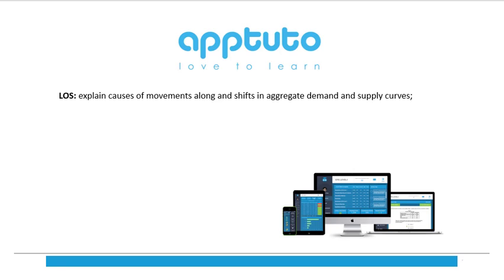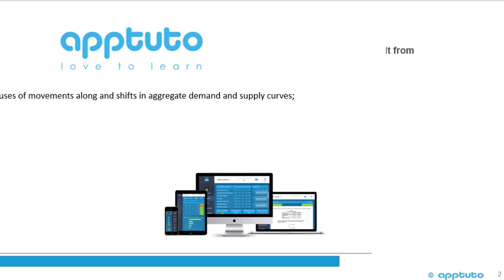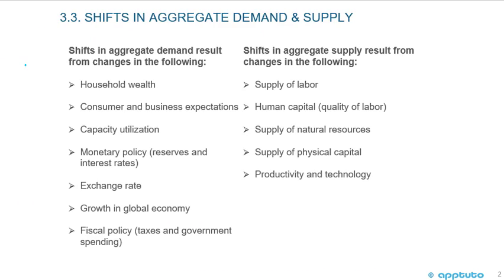This LOS explains causes of movements along and shifts in aggregate demand and supply curves. We're looking at shifts in aggregate demand and supply — on the left-hand side we have shifts in aggregate demand resulting from changes in certain factors, and on the right-hand side we have shifts in aggregate supply resulting from changes in the following.